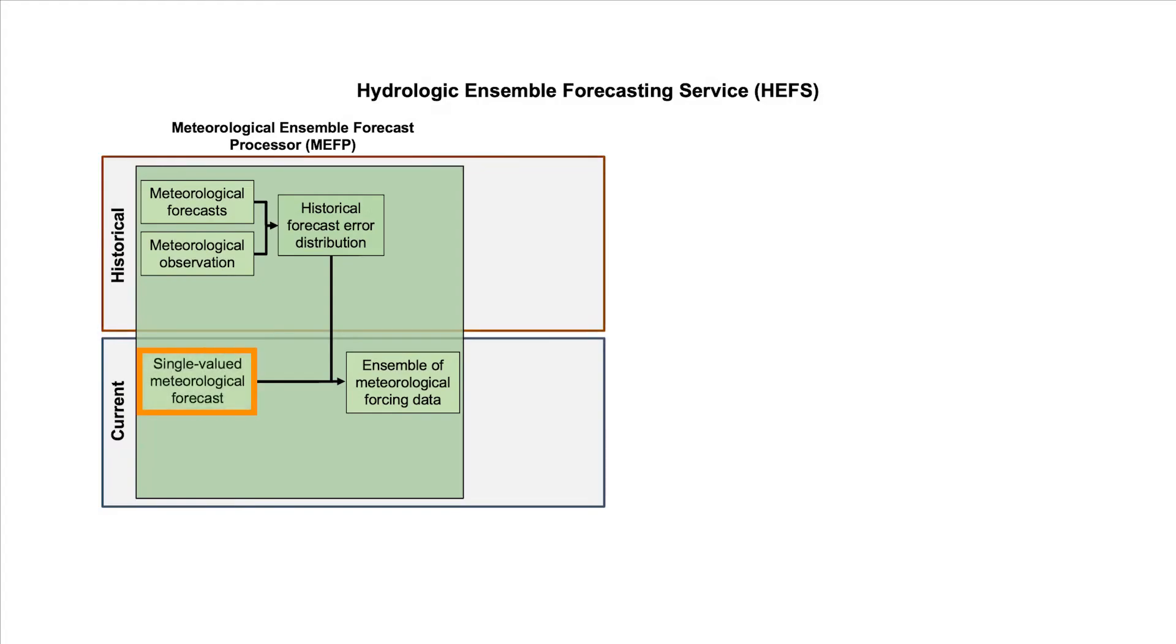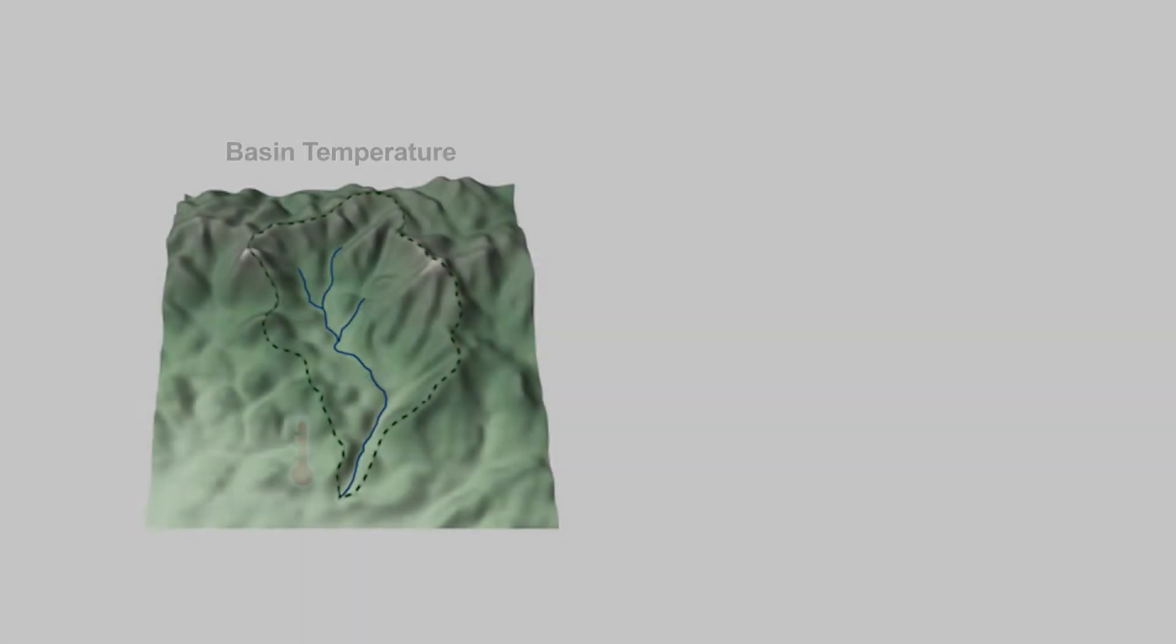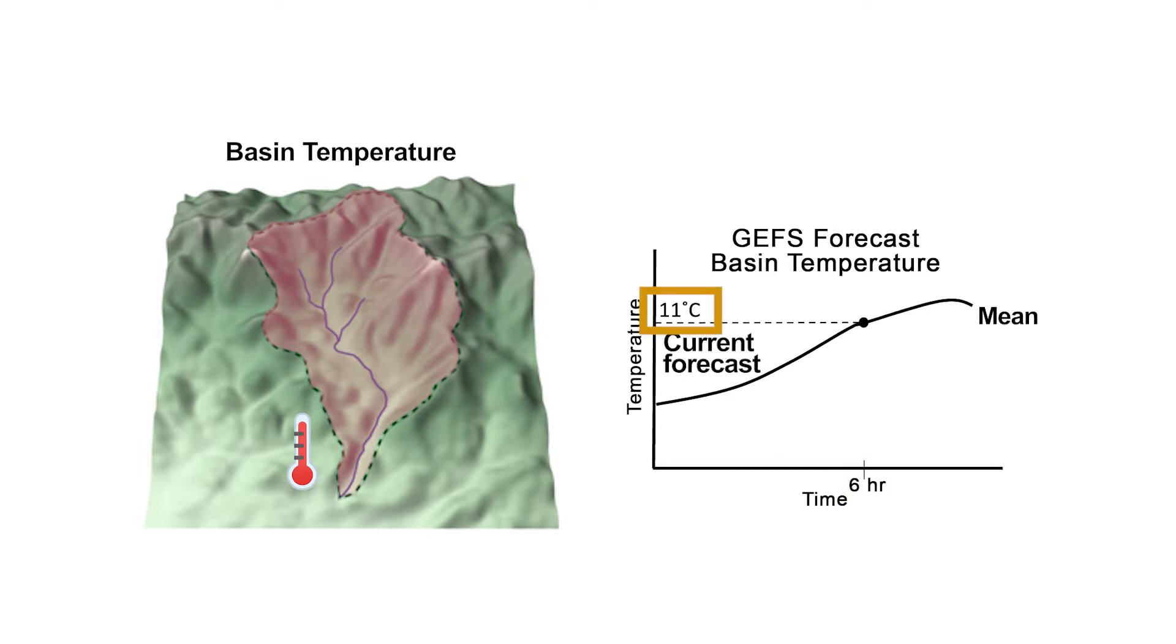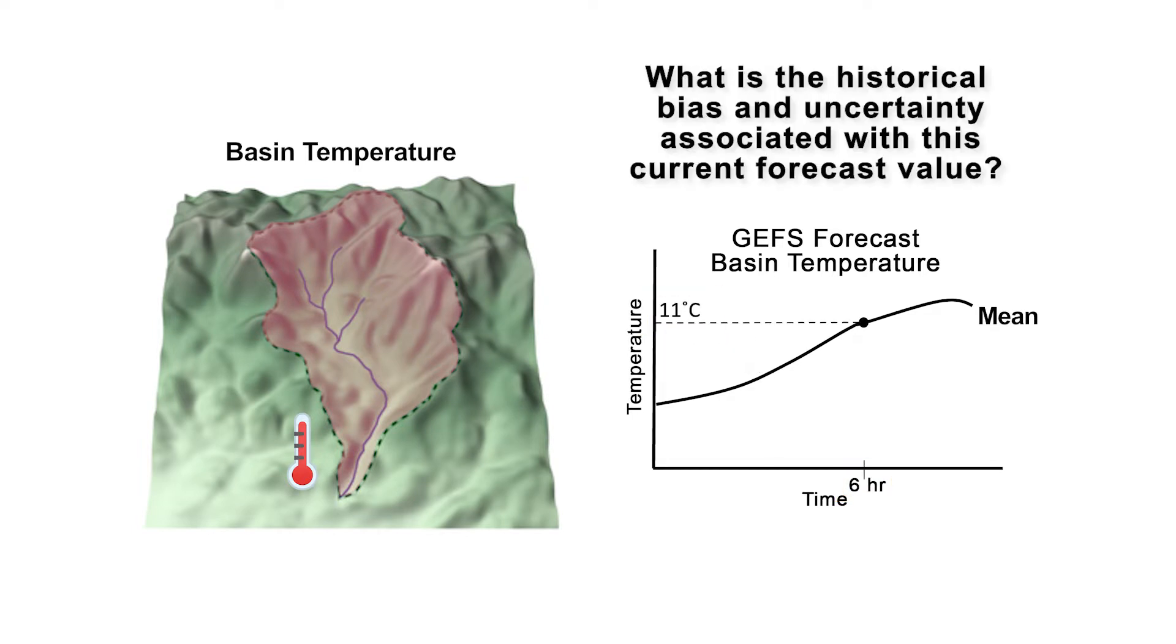Next, we need to sample the distributions based on the current single-valued meteorological forecast. Let's say the current GEFS forecast mean temperature for the river basin of interest at a forecast lead time of six hours is 11 degrees Celsius. Now, how can we find the historical bias and uncertainty associated with this current forecast value?